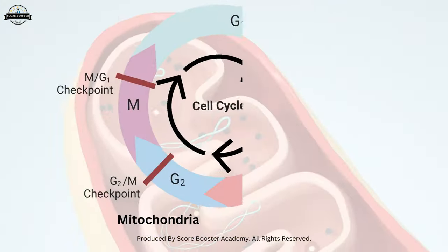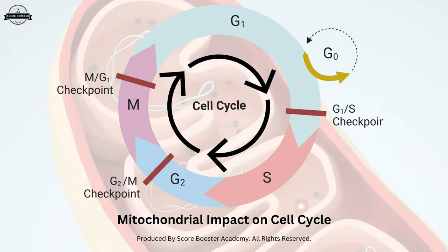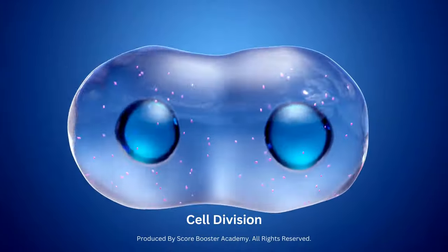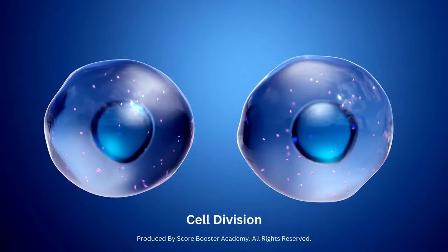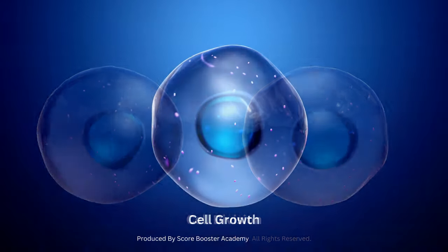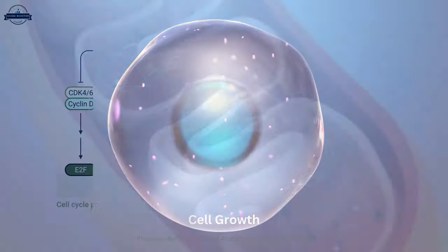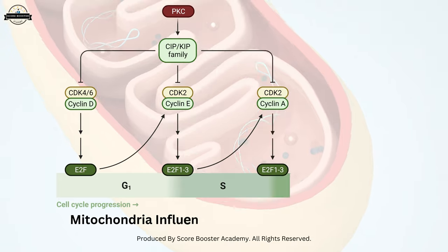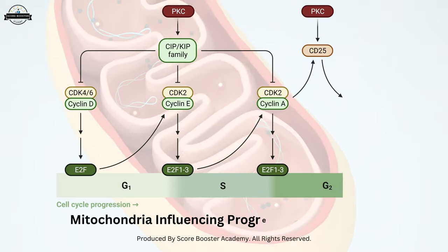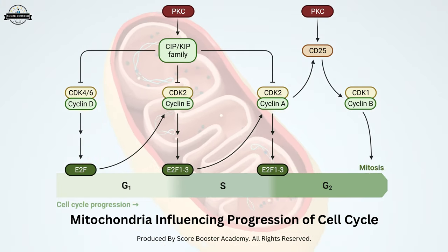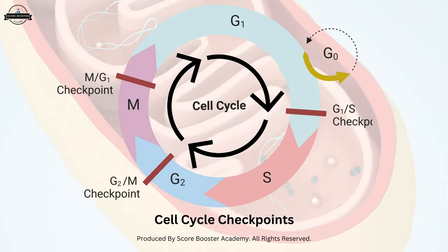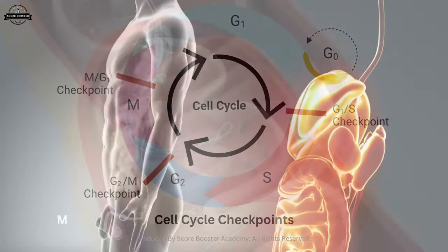Mitochondria have been found to play a role in regulating the cell cycle, specifically in controlling cell division and cell growth. They can influence the progression of the cell cycle by modulating the levels of specific signaling molecules involved in cell cycle checkpoints.